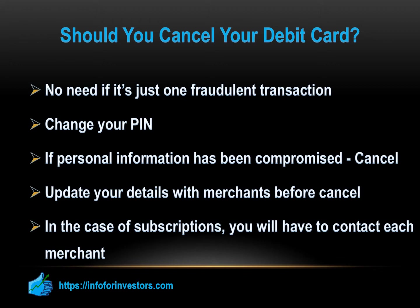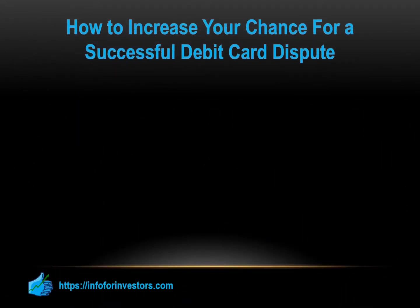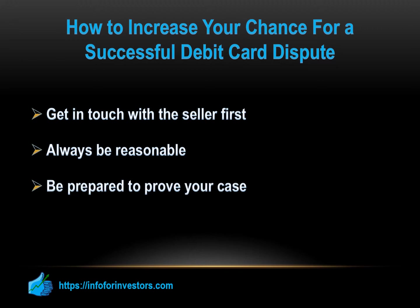A debit card dispute can come out for or against your favor — there's no guarantee you will be successful every time. However, there are steps you can take to increase your chances. First, get in touch with the seller first, regardless of whether you used a credit or debit card — you may be able to resolve the issue by dealing directly with the retailer or service provider. Second, be reasonable: chargeback is a remedy when the merchant is in the wrong, not when the customer simply changes their mind. If you buy something and don't like the color, take that up with the merchant. Third, make sure you are fully prepared to prove your case — when you file a dispute with your bank, clearly show why they should decide in your favor by providing compelling evidence.